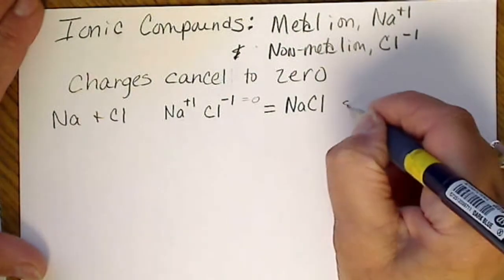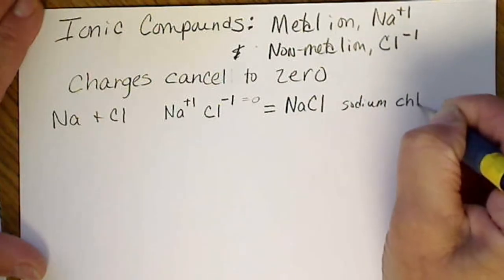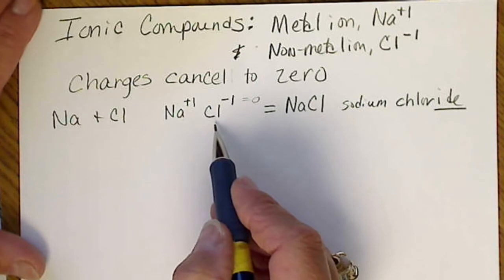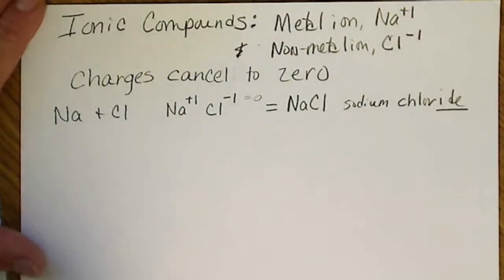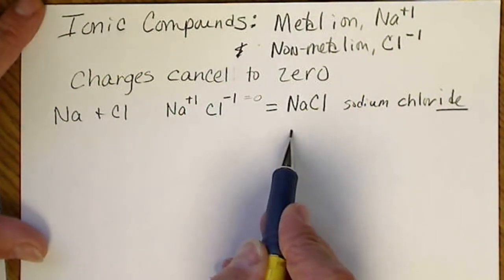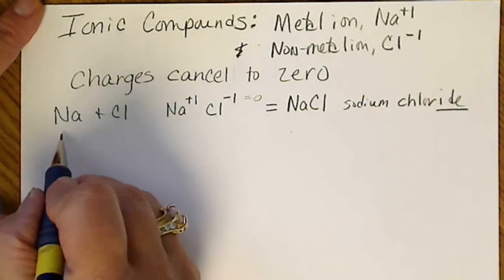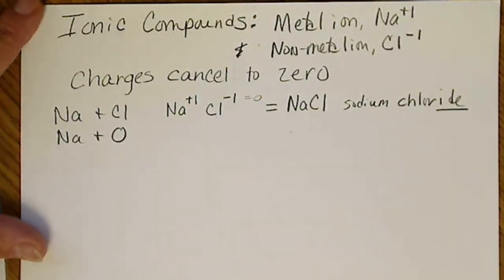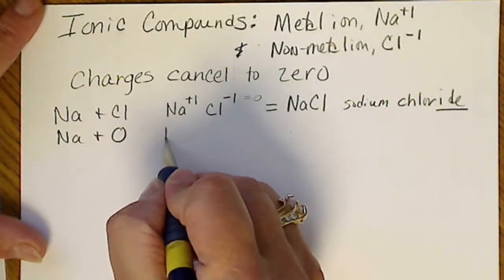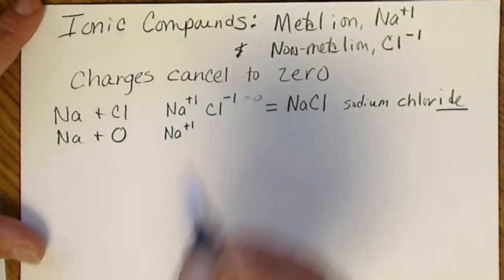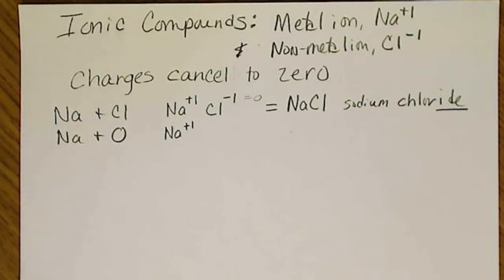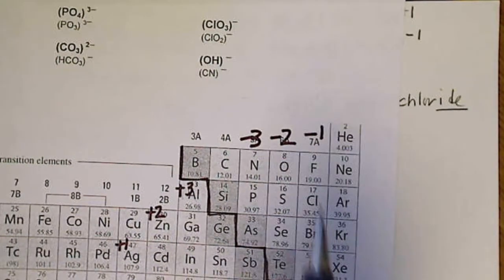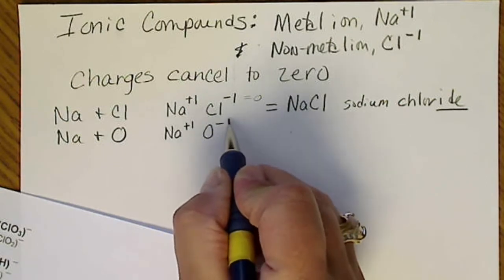If we have sodium and an oxygen atom, for example, sodium is still a plus 1 because sodium's charge never changes, and now we look for oxygen. Oxygen is in the minus 2 column, so we'll put the charges on there.